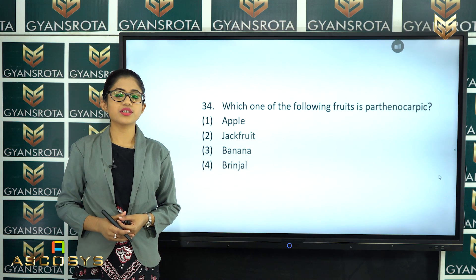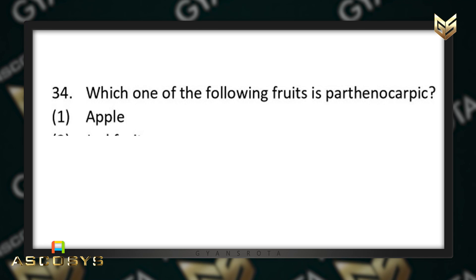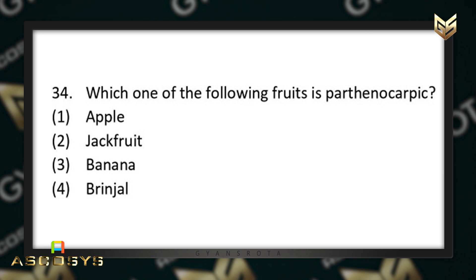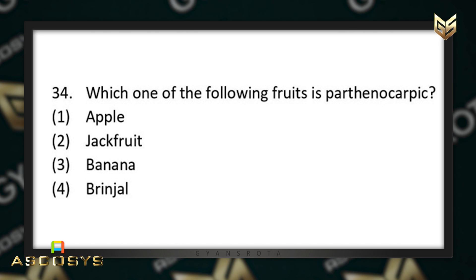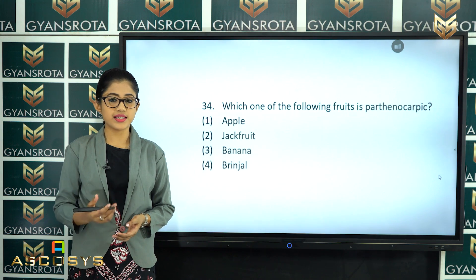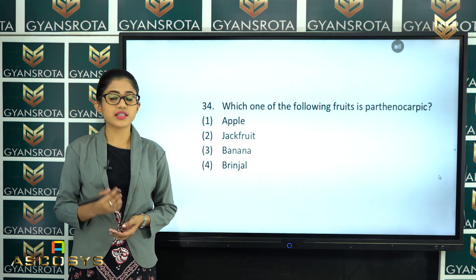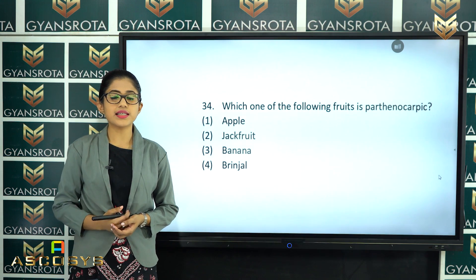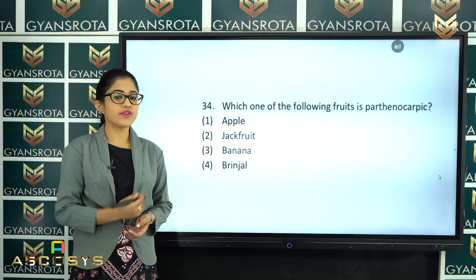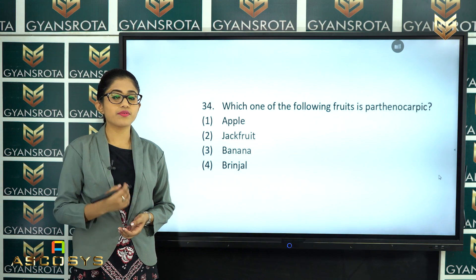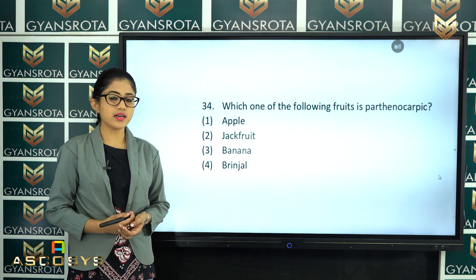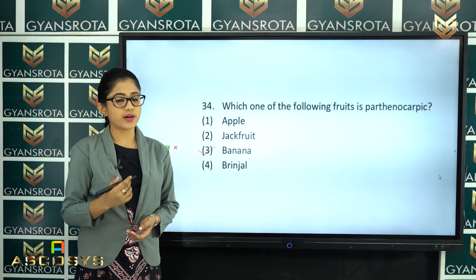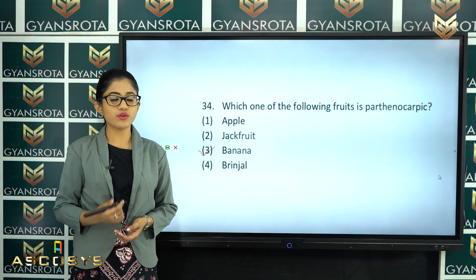The next question is question number 34. Which one of the following fruits is parthenocarpic? Apple, jackfruit, banana, or brinjal? This is an easy question from the chapter Sexual Reproduction in Flowering Plants, and it is directly given in the NCERT textbook. The correct answer is option number 3 — banana is an example of a parthenocarpic fruit.